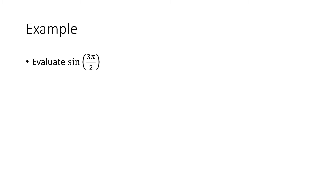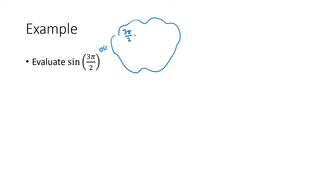Let's do another example. Here we have a specific angle: the sine of 3π/2. It may help to convert this to degrees: multiplying 3π/2 by 180/π gives 270 degrees.